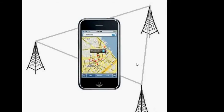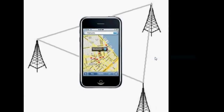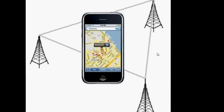As the cell phone moves away from one tower and gets closer to another, the signal automatically switches to the nearer tower.